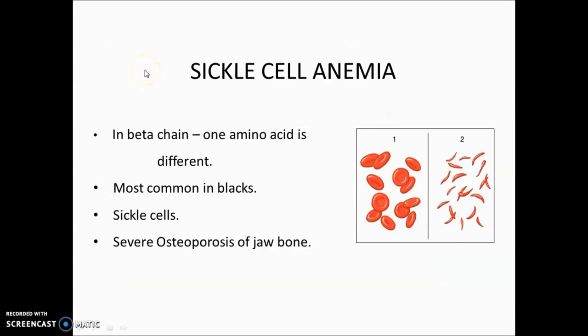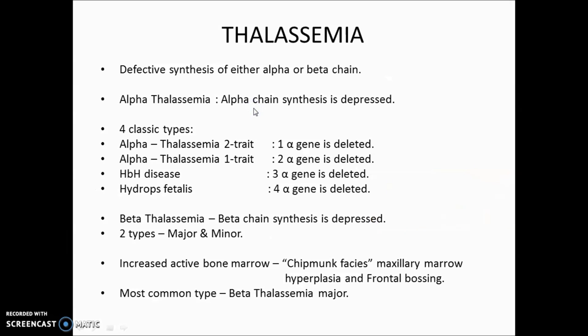In sickle cell anemia, there is a defect in the beta chain — a substitution of glutamic acid to valine. It is most common in Blacks. Persons with sickle cells are resistant to falciparum malaria. The most important clinical feature from a dental perspective is severe osteoporosis of the jawbone.